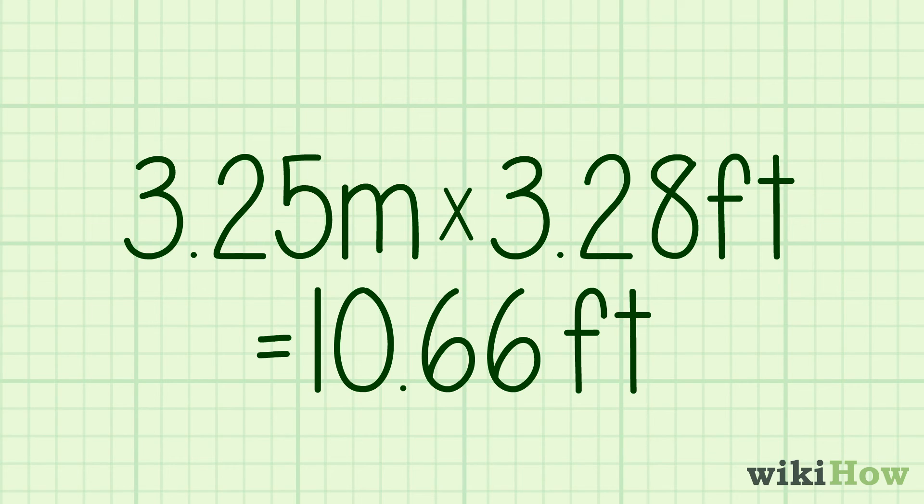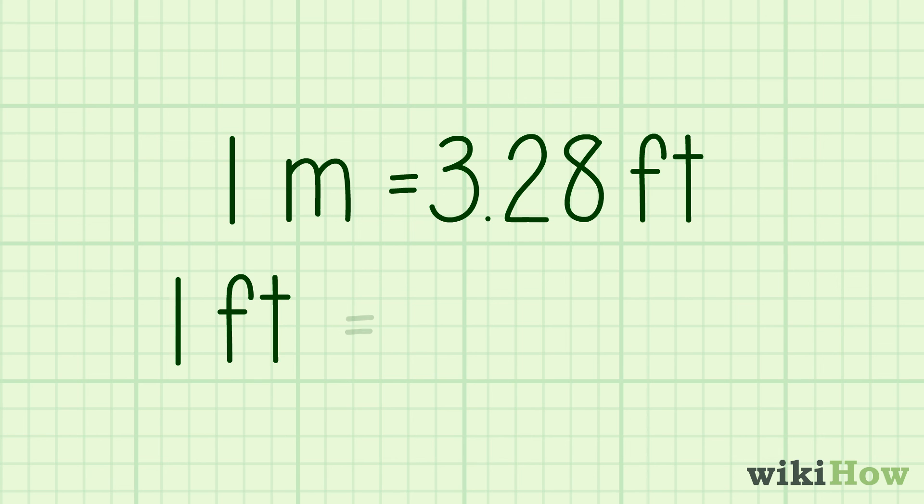If you need to be more accurate or you're taking precise measurements, use more decimal places so that one meter equals 3.28 feet and one foot equals 0.3048 meters.